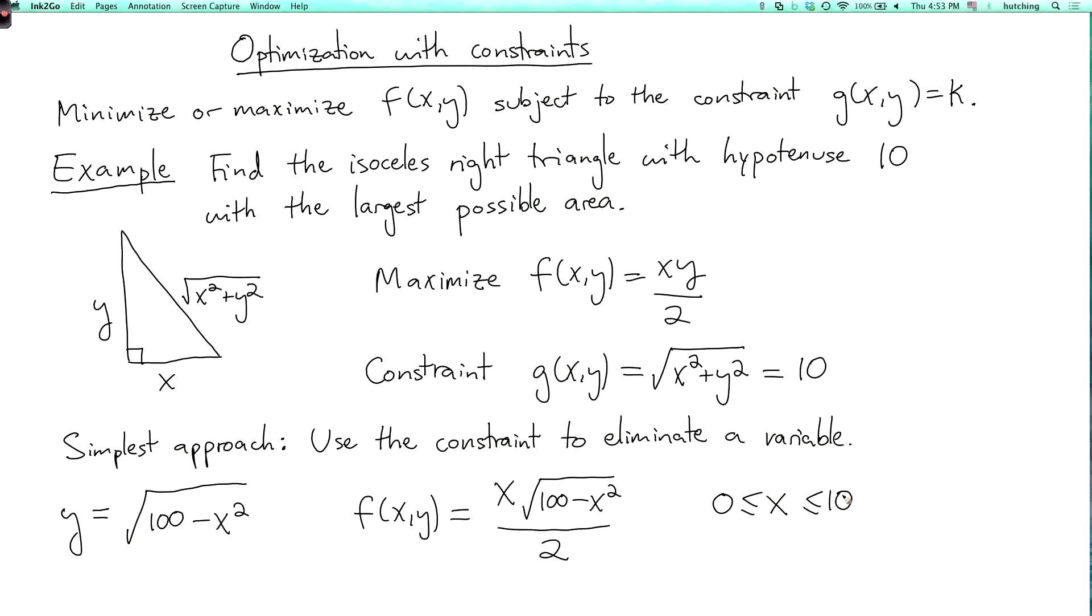So we now want to maximize this function where x goes from 0 to 10. And since this only depends on x, let's call this g of x. Now we can do this using single variable methods. We're trying to maximize g of x equals x times the square root of 100 minus x squared over 2 for x going from 0 to 10.